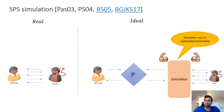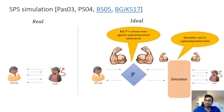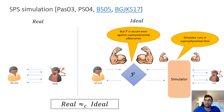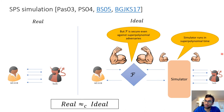SPS simulation is meaningful because in some cases the ideal functionality itself is secure against superpolynomial adversaries. We still want the security guarantee that the real view should be computationally indistinguishable from the ideal world view, where the ideal world view is being simulated by a superpolynomial simulator.